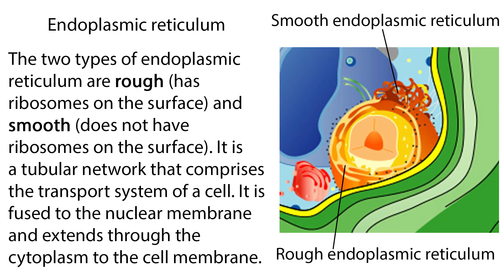The endoplasmic reticulum comes in two types: rough, which has ribosomes on the surface, and smooth, which does not have ribosomes on the surface. It is a tubular network that comprises the transport system of a cell. It is fused to the nuclear membrane and extends through the cytoplasm to the cell membrane itself.